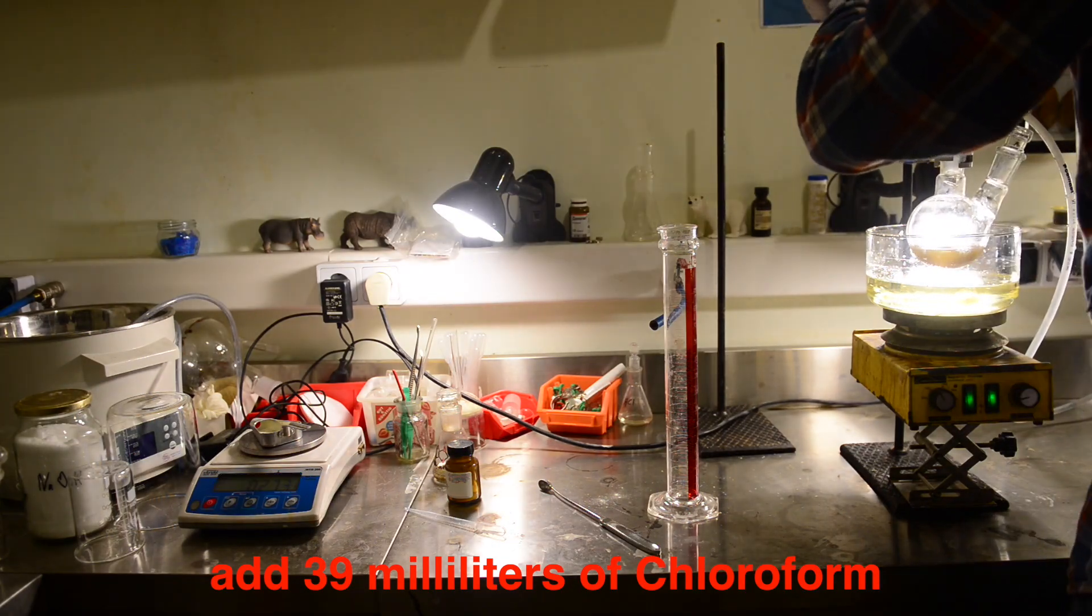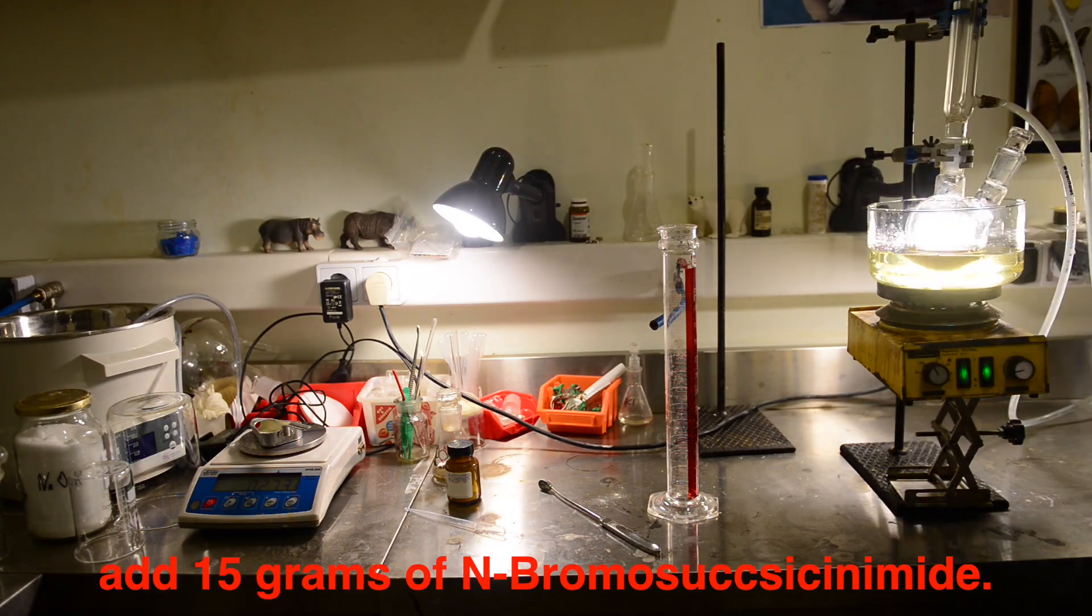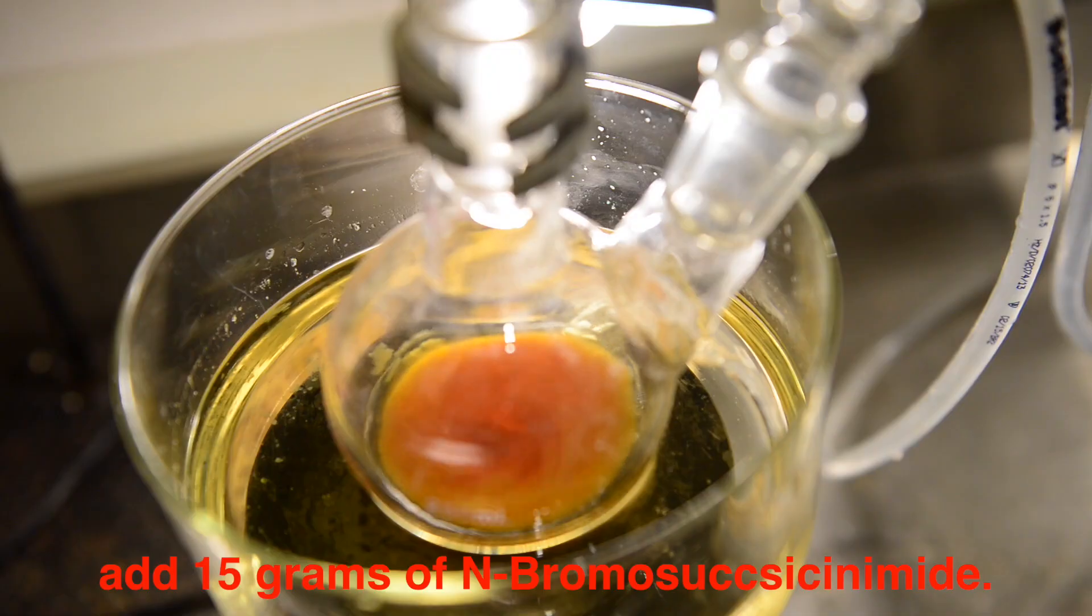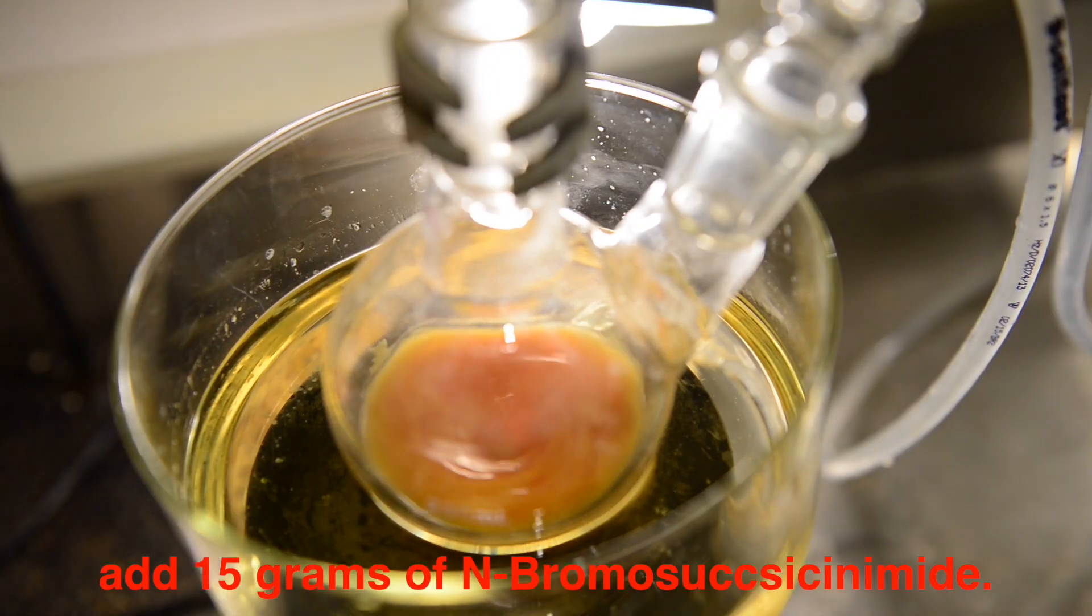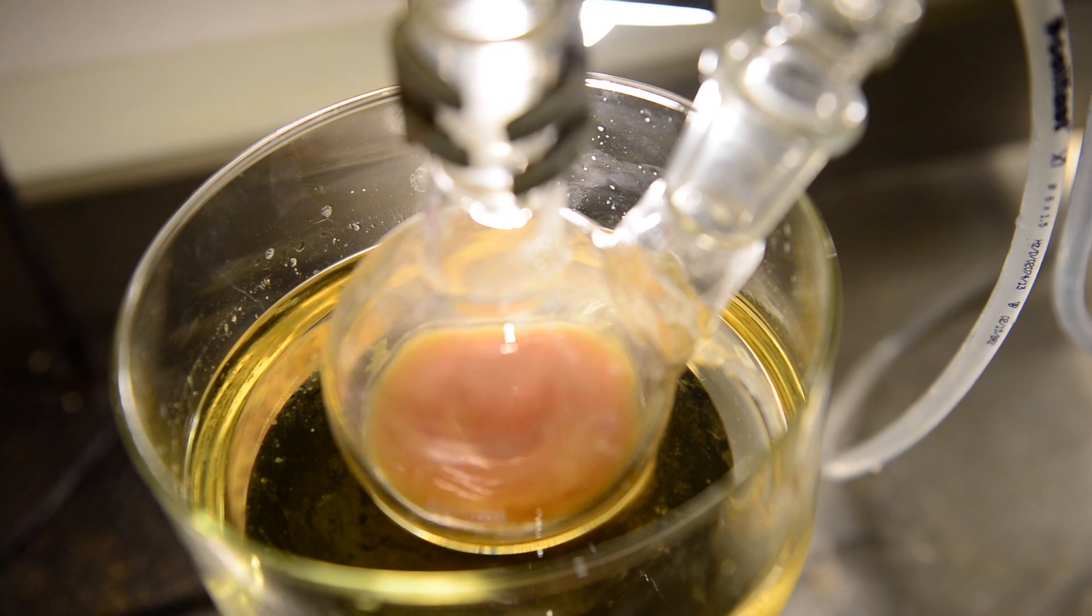We are adding 15 grams of NBS as the last reagent. We are setting the heater to 100 degrees Celsius and start stirring. Reflux must be maintained for 3 hours.